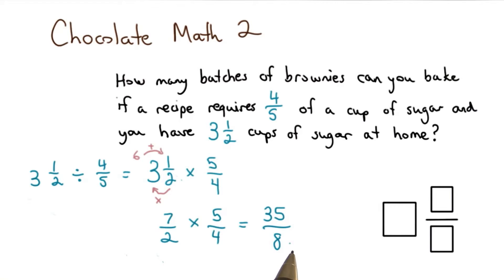Now I want to change this back into a mixed number to figure out how many batches of brownies I can make. 8 goes into 35 four times, because 8 times 4 is 32. And I'm left with 3 extra pieces, or 3/8. So I can make 4 3/8 batches of brownies.